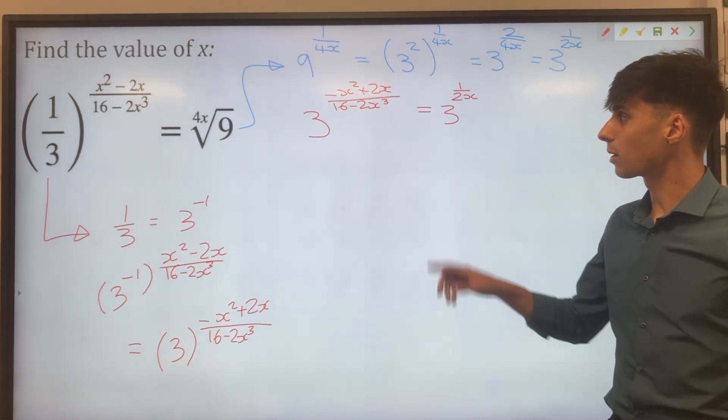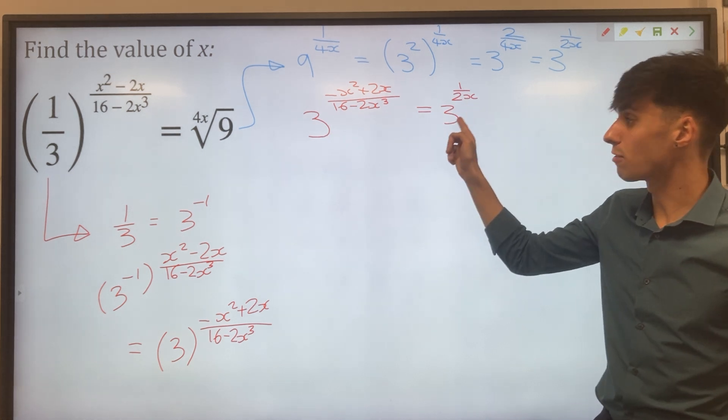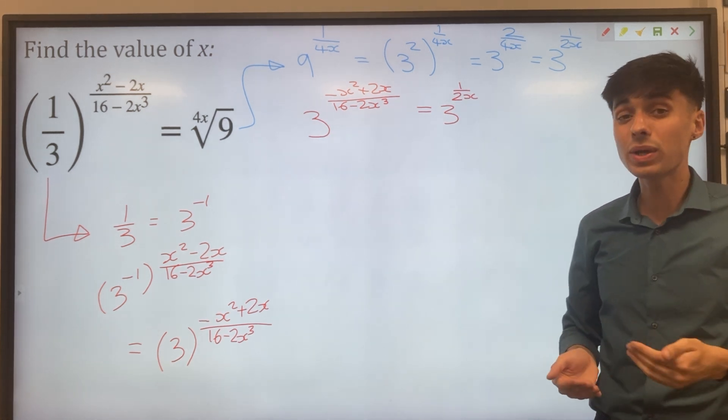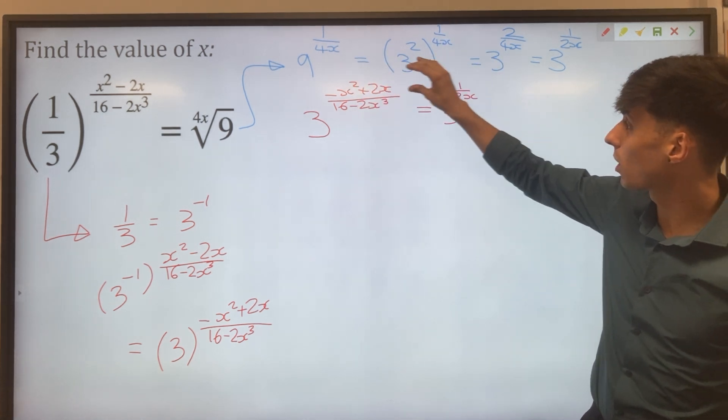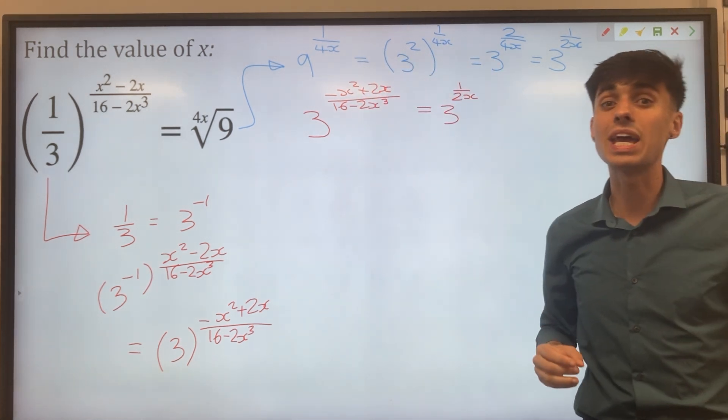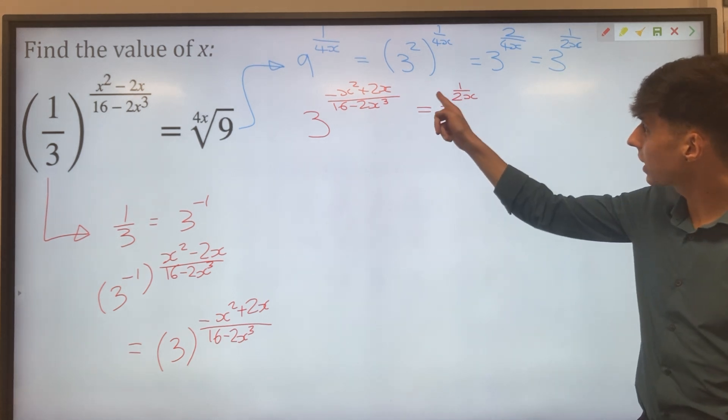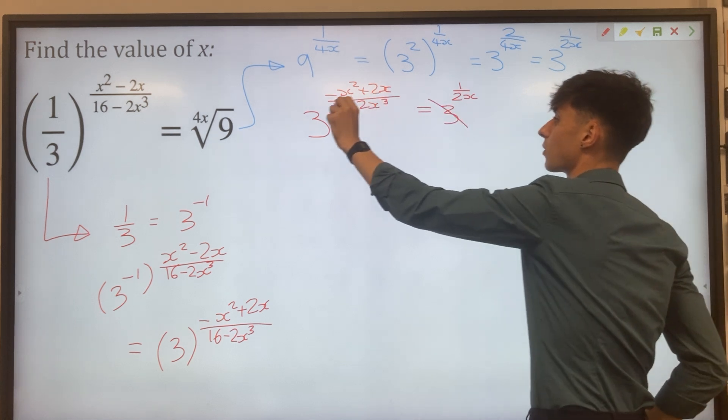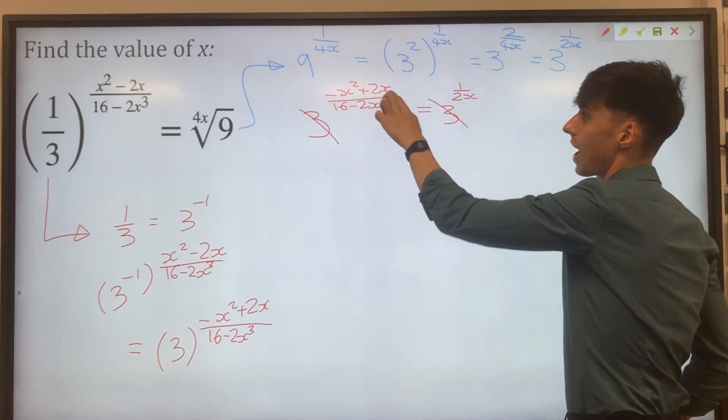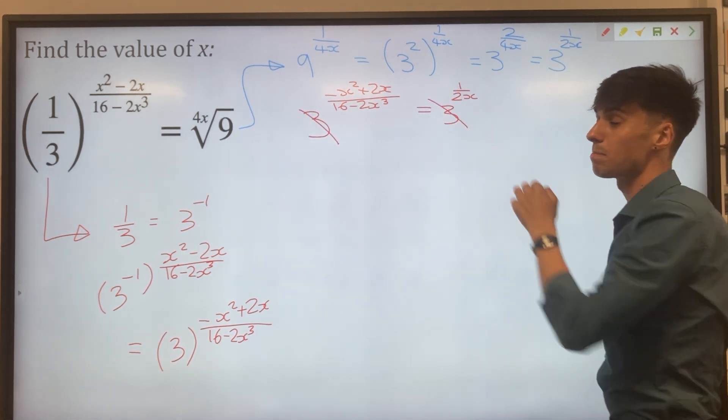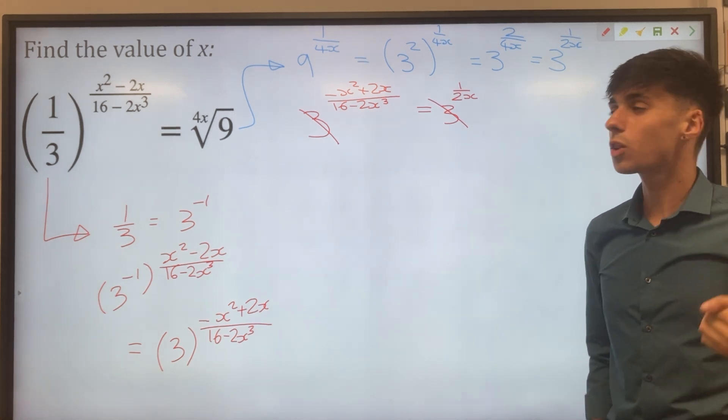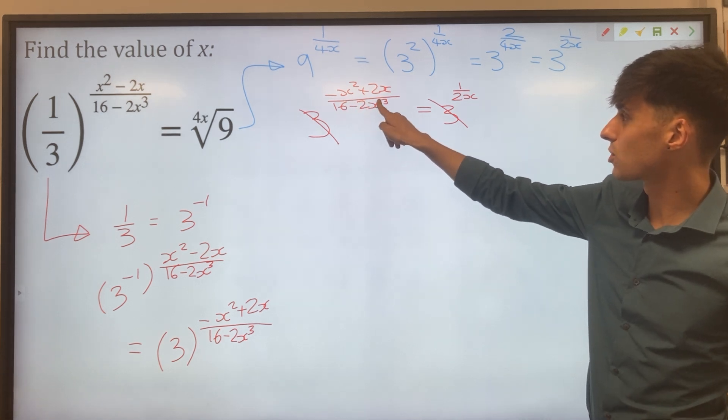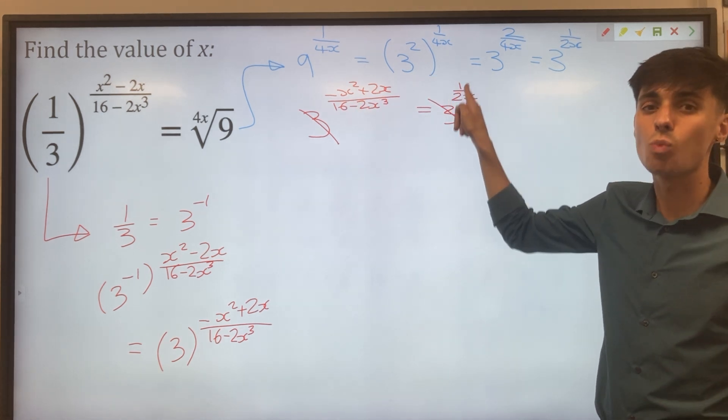The whole point of making both of these have a base of 3, giving them the same base, is that now we can equate if we have the same power, these would give you the same number. So we can actually imagine getting rid of the 3's here. So we can think about getting rid of the 3, getting rid of the 3, and just looking at powers being equal to each other. In other words we're saying minus x squared plus 2x over 16 minus 2x cubed equals 1 over 2x.